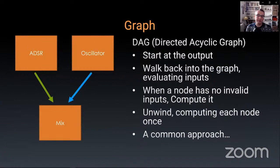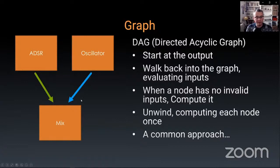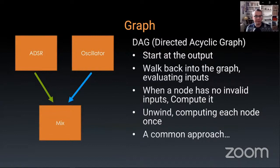In my directed acyclic graph, I start at the output and walk back evaluating inputs. At a mixer, I check whether its inputs — an oscillator and an ADSR — have been updated for the current frame. If not, I walk back to evaluate them first. Every node runs once, and after evaluation you have your sound samples. This same graph concept is used in graphics; for example, the Battlefield 4 rendering graph has many nodes building lighting effects, depth information, and geometry to form the final frame.